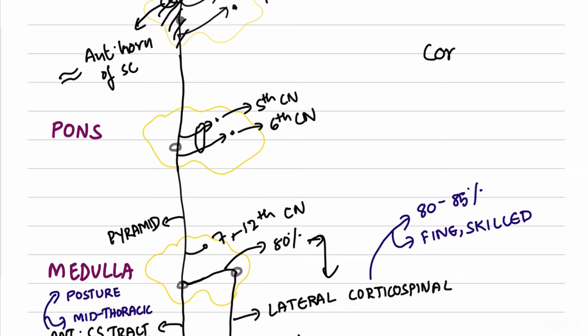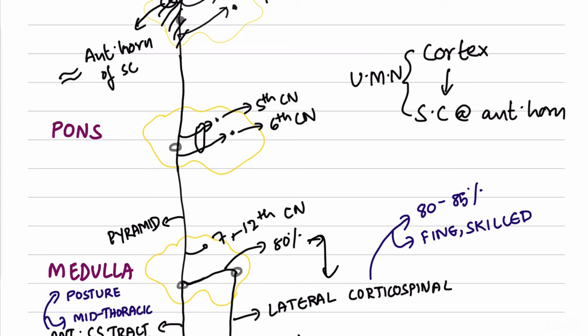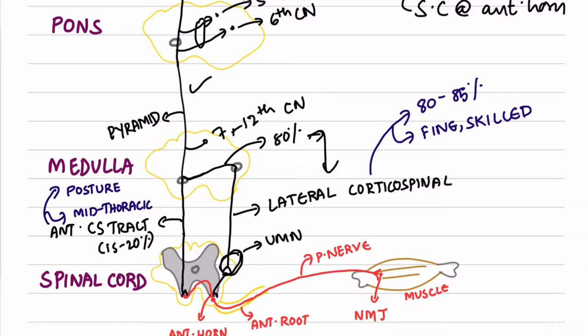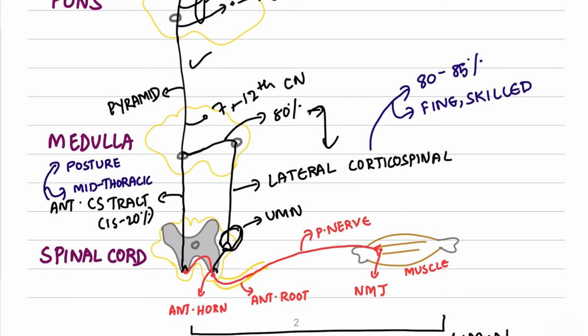To understand lesion types, we need the concept of upper motor neuron (UMN) and lower motor neuron (LMN). The upper motor neuron extends from the motor cortex down to the anterior horn cell of the spinal cord — the entire descending pathway without synapses. The lower motor neuron starts from the anterior horn cell, passes through the anterior root, peripheral nerve, neuromuscular junction, and finally the muscle.